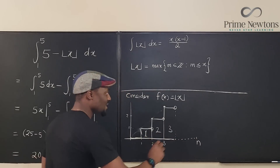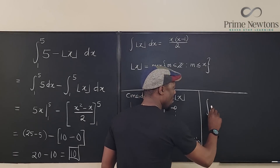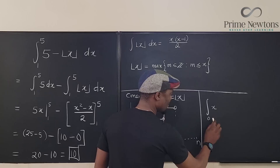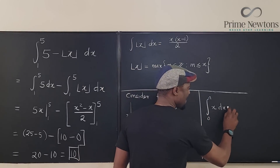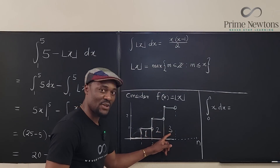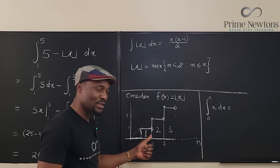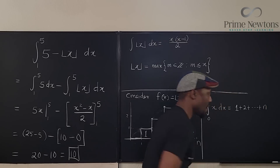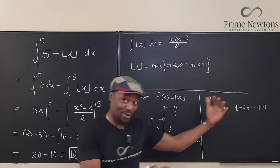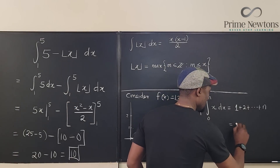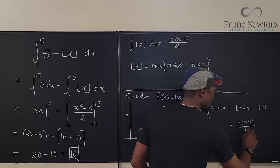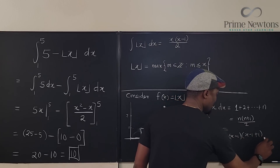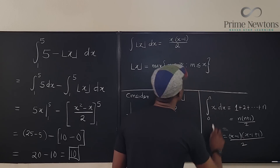So the integral of floor(x) from 0 to n is the sum of all those rectangles: 1 plus 2 plus … but you're always one short. The sum becomes (n minus 1) times n divided by 2, which — replacing n with x — gives x minus 1 times x divided by 2, confirming our formula.